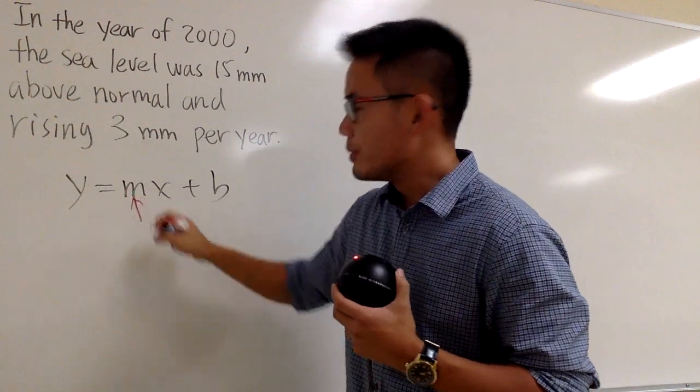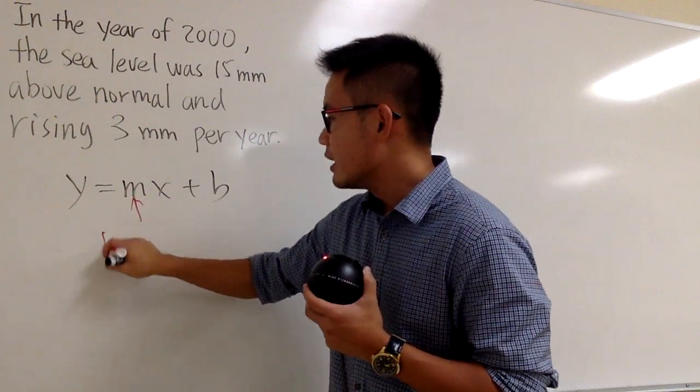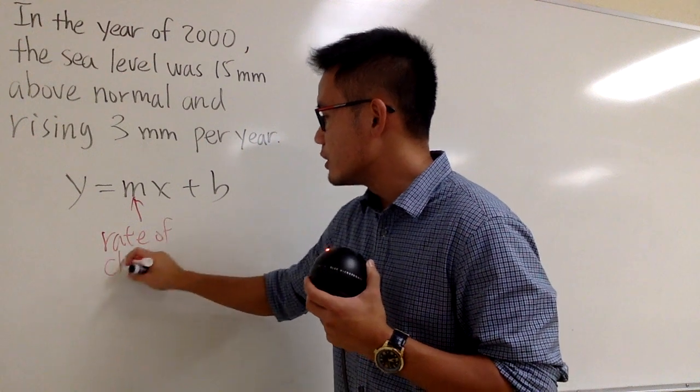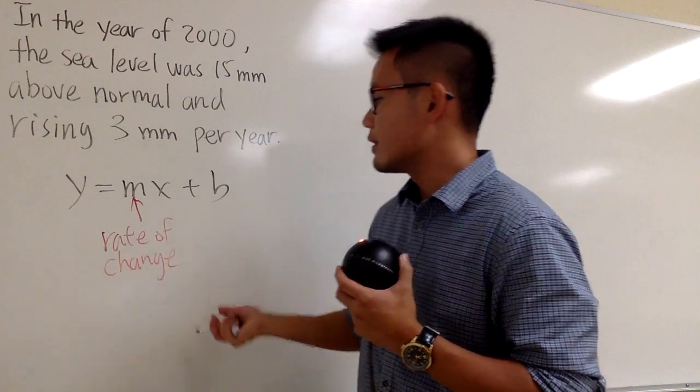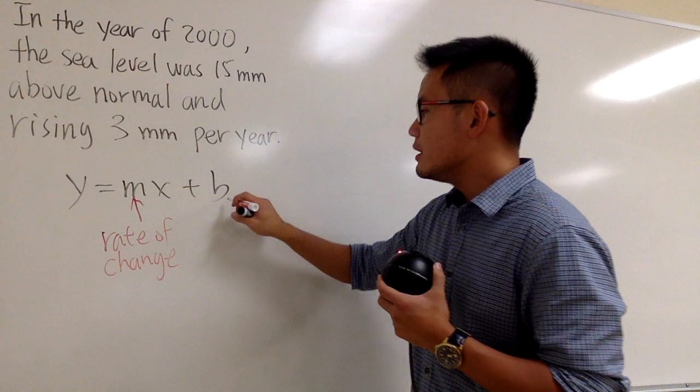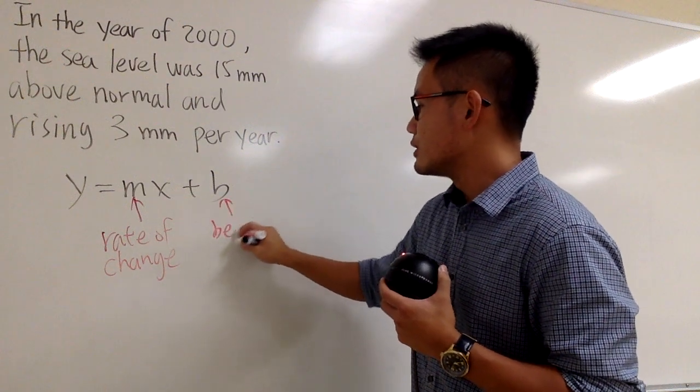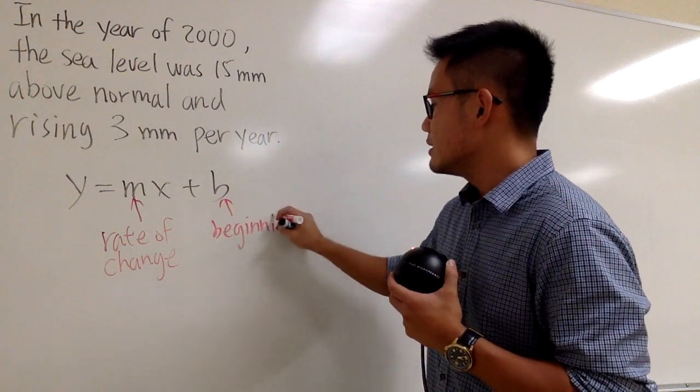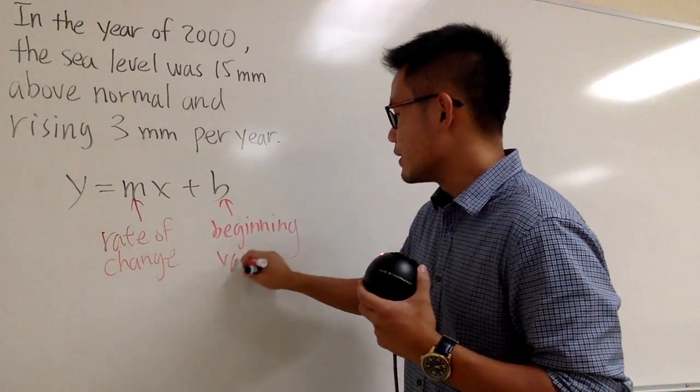m is the slope, and it's also representing the rate of change depending on the content. And the b is the starting value, but I like to use the word beginning because it has the b in here. The beginning value for this.